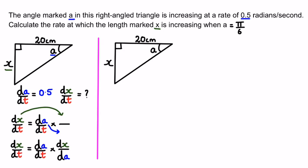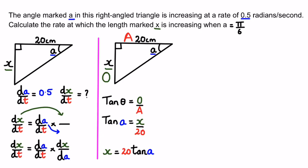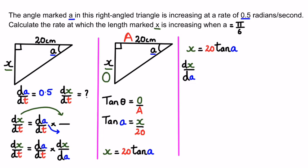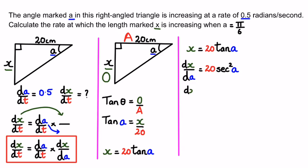We need to link x and a. Since x is the opposite side and 20 is the adjacent side, we can write tan(a) = x/20, which rearranges to x = 20 tan(a). Differentiating with respect to a gives dx/da = 20 sec²(a). Now we have all the pieces to substitute back into the chain rule equation.